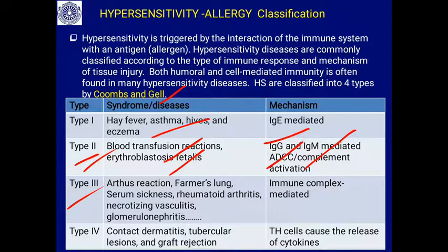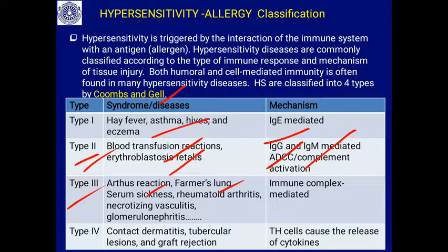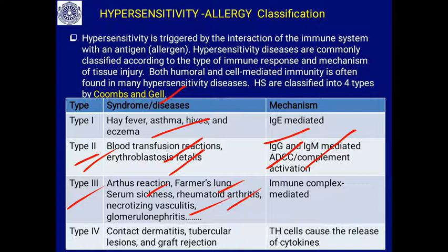Type 3 hypersensitivity includes autoimmune diseases. It involves the Arthus reaction, farmer's lung due to fungal allergens, serum sickness from antigens of non-human origin, and rheumatoid arthritis — where inflammation of synovial joints occurs and antibodies lead to necrotizing vasculitis. All these come under type 3, which is immune-complex mediated: antigen-antibody complexes form and lead to these diseases.